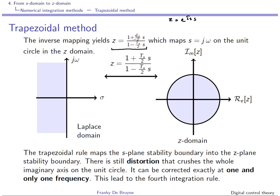This trapezoidal relation maps the jω axis onto the unit circle, and the region to the left of the jω axis is mapped inside the unit circle, while the region to the right is mapped outside. So a system that is stable in the S domain will remain stable in the Z domain, and all systems unstable in the Laplace domain will remain unstable in the Z domain using this trapezoidal method. This is an improvement over what we had with the Euler integration methods.